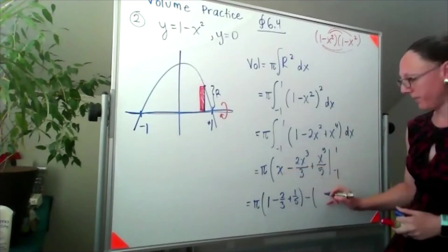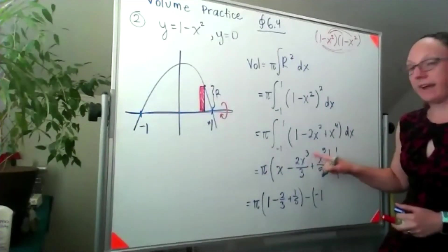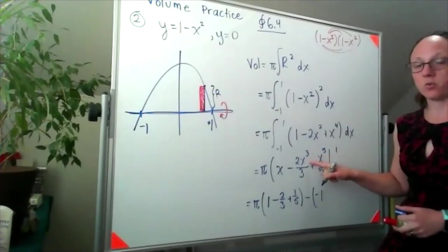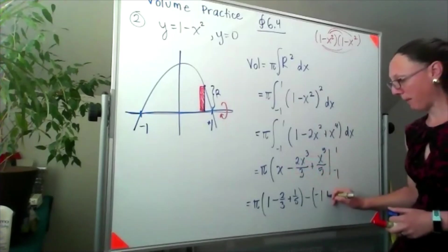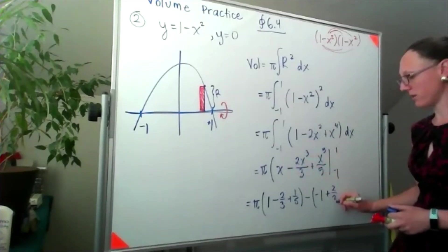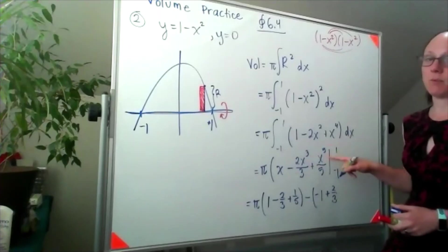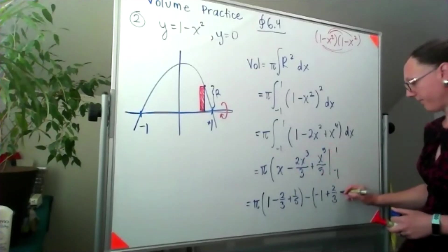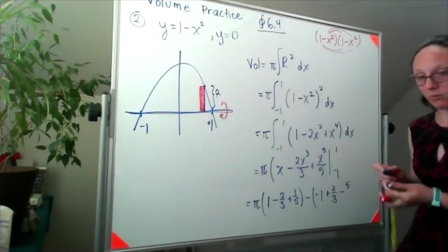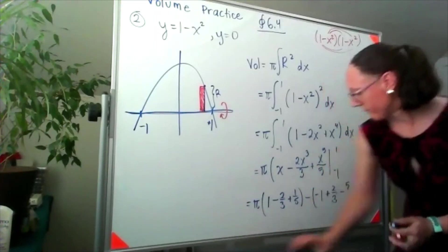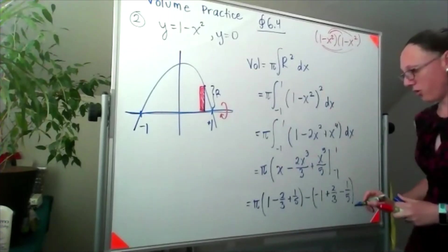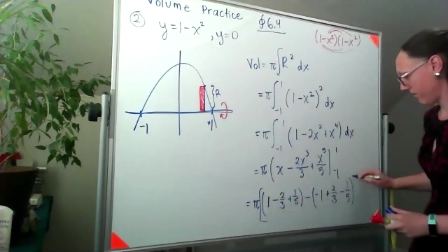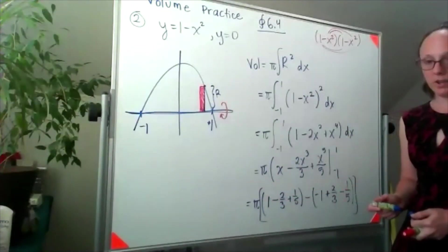When I plug in negative 1, I'll end up with negative 1. Negative 1 cubed is going to give me a negative number, so minus and minus would make that plus 2 thirds, and then negative 1 to the fifth, it's going to give me a negative 1. So I'll have negative 1 over 5, and I would probably quit there.